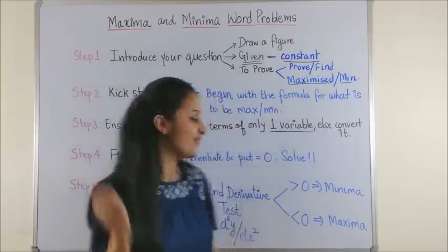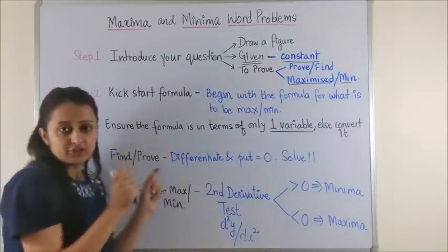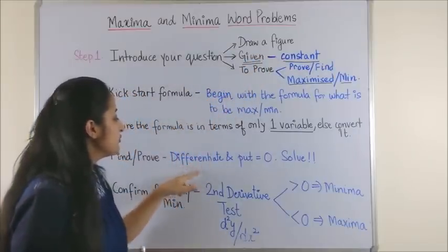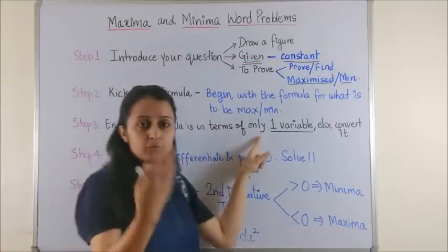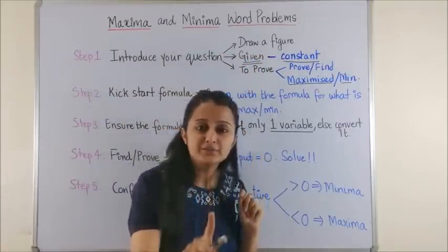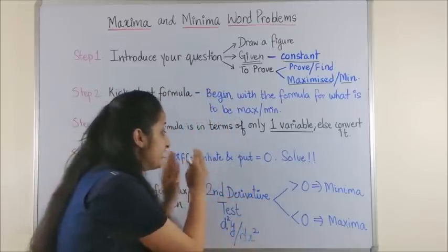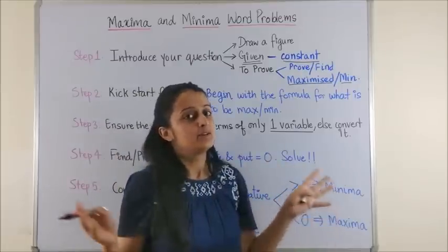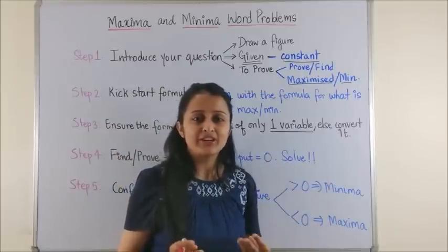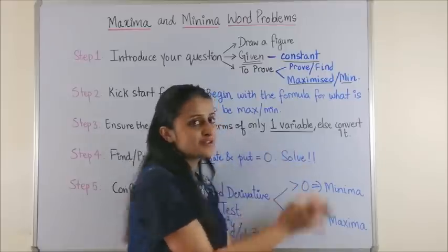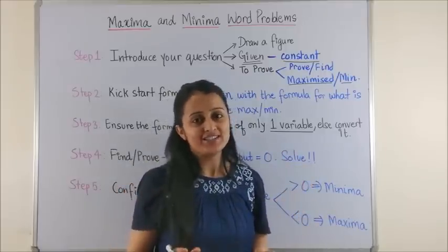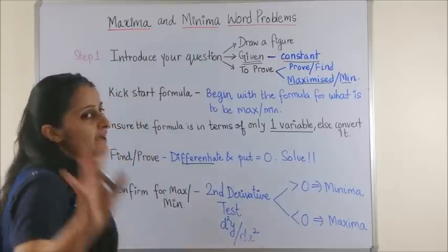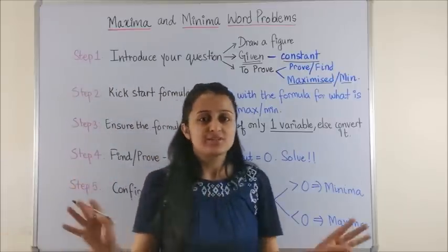Step number 4: find or prove. This is the part which we are now trying to find what we are going to do. For this, once you have converted the above formula in terms of only one variable, differentiate it and put it equal to zero. The moment you do that, just like your critical points, you solve, solve, solve and you'll reach your answer.